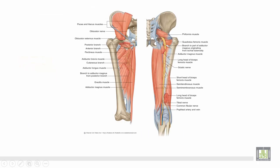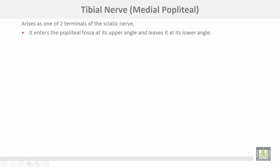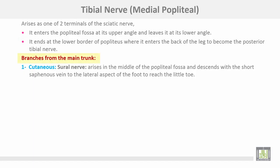The tibial nerve arises as one of the two terminals of the sciatic nerve. It enters the popliteal fossa at the upper angle and leaves at the lower angle. It ends at the lower border of the popliteus muscle where it enters the back of the leg to become the posterior tibial nerve. The cutaneous sural nerve arises in the middle of the popliteal fossa and descends with the short saphenous vein to the lateral aspect of the foot.